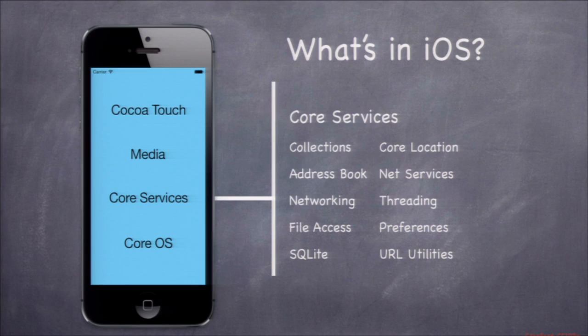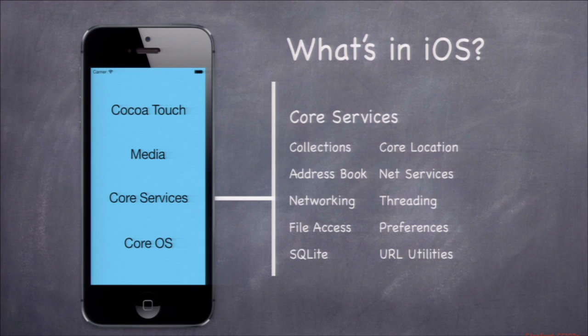The Core Services layer has things that make the language more powerful, like arrays, dictionaries, and strings, plus object-oriented ways to access the file system, find out the GPS location of your device, and do multi-threading. All the things you want to do while staying in an object-oriented mindset — there's a huge foundational layer at Core Services for doing that.